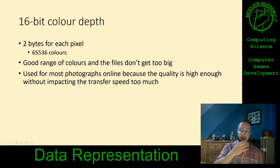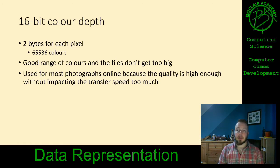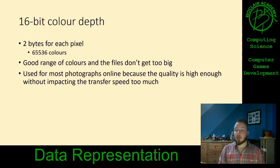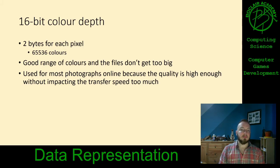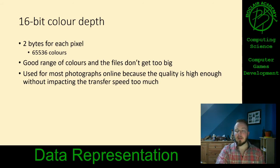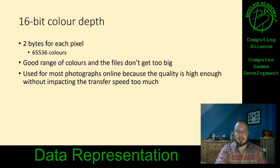16-bit colour depth is the next one up. This allows you about 65,000 colours for each pixel, which gives you a really decent range of colours, and the files don't get too big because it's only 2 bytes per pixel. This is what you'll most likely have seen — most images that you use online will use a 16-bit colour depth. However, it's not great if you're wanting photographer-quality photographs. It's fine for transferring files online, because the devices you view these files on don't need to be high-quality graphics.